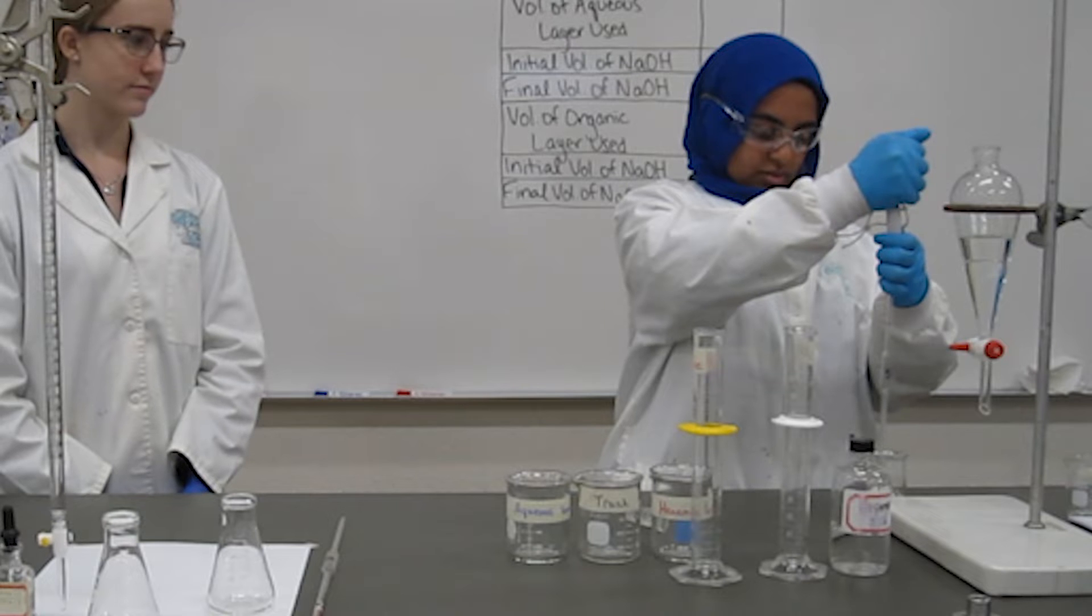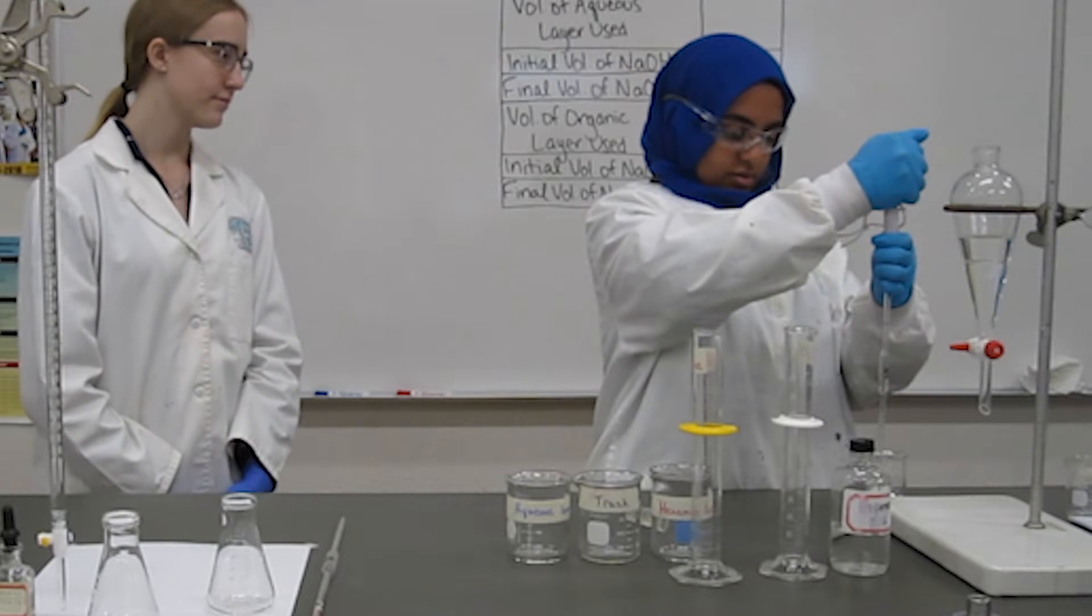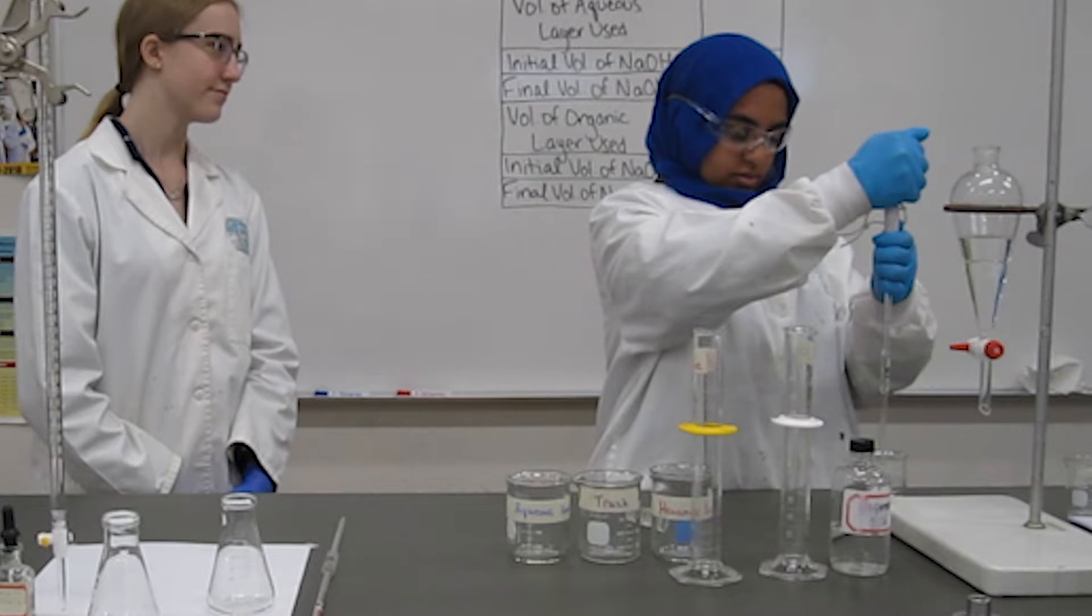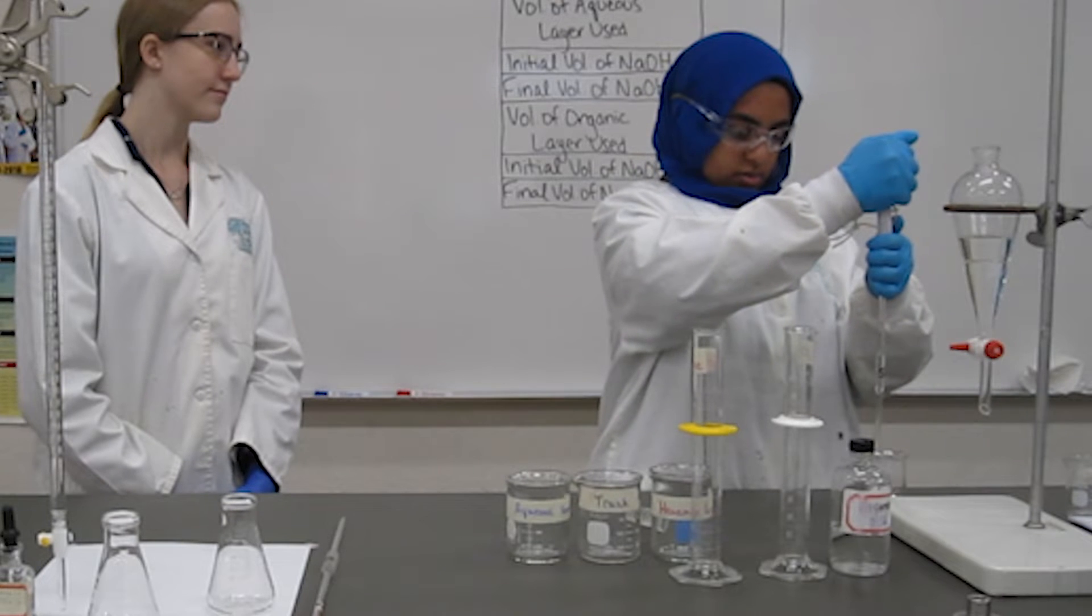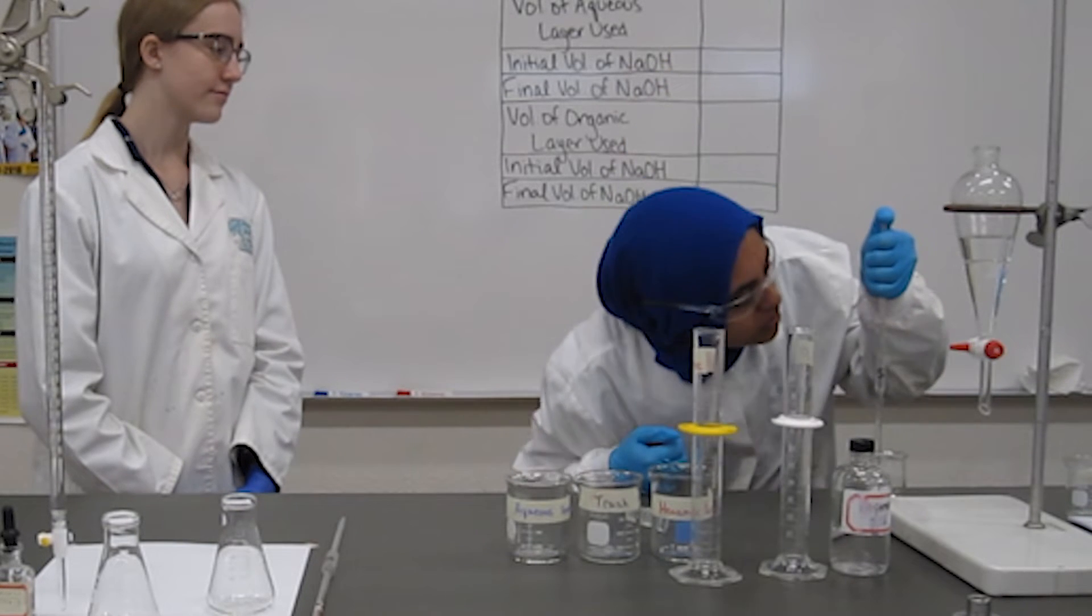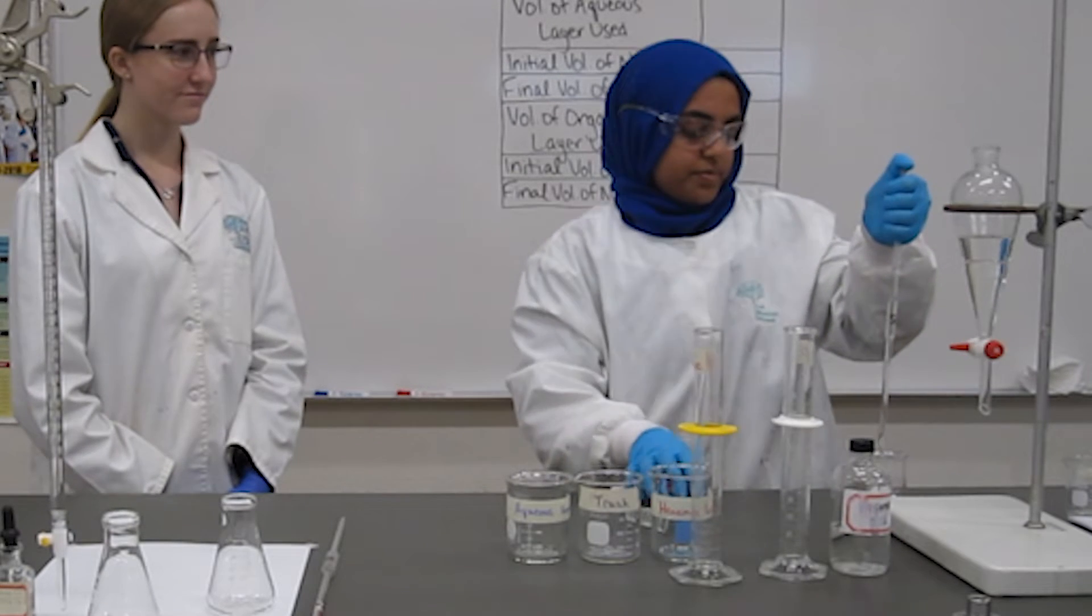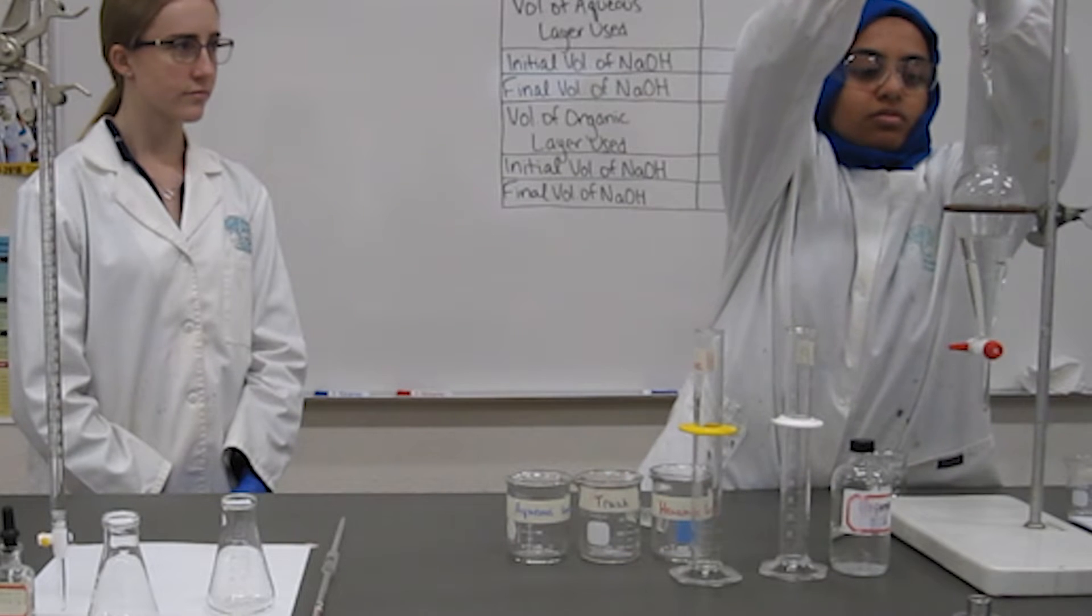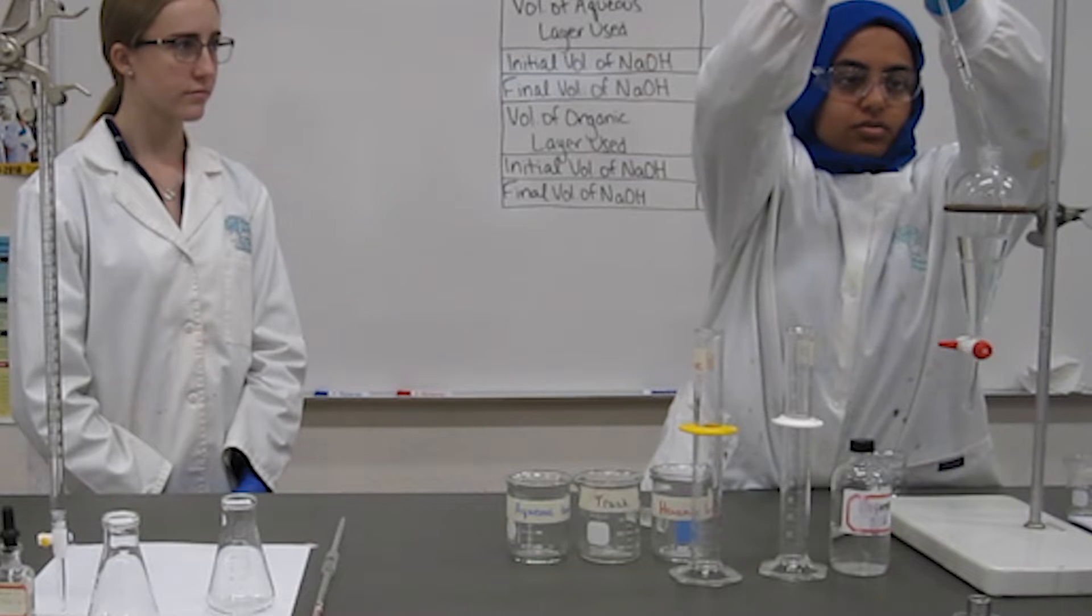Using the bulb, you can suck up the propanoic acid past the line, remove your bulb and replace it with your thumb. Then, slowly rolling your thumb off, you can lower the level to the line. Release your thumb and insert the five milliliters of propanoic acid.